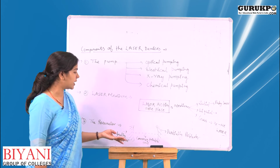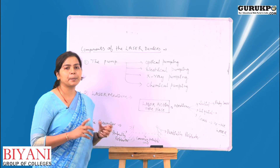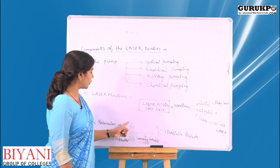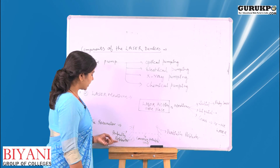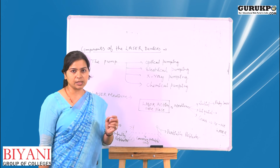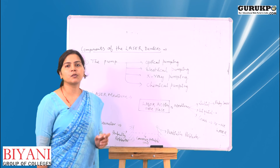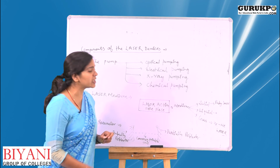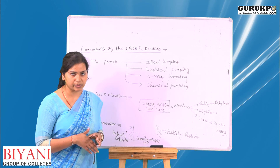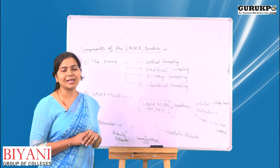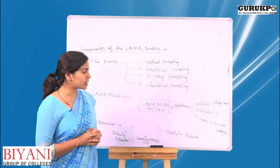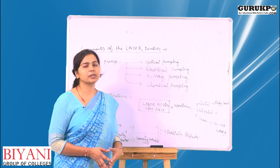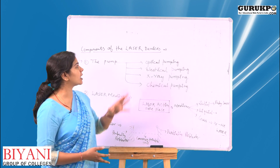Third and last is the resonator. The resonator is a combination of plane or spherical mirrors. One mirror is a perfectly reflector, having a reflection coefficient of near about 1. The other mirror is a partially reflector, having a reflection coefficient less than 1. Because if both mirrors have a reflection coefficient of 1, then we cannot obtain the laser beam. That is why one mirror is partially reflective. So these are the components of the laser devices.